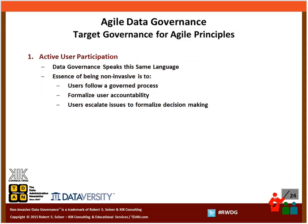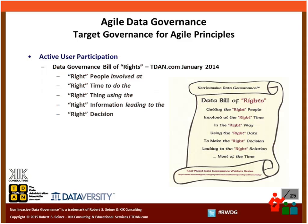The first item is active user participation. Most places I've read about agile development methodologies talk about actively engaging people through the processes associated with agile projects. It's kind of funny because data governance speaks the same language. The idea of data governance is to get the right people involved at the right time to do the right thing, using the right information to lead to the right decision. We want to make certain we're getting the appropriate users of the data, users of the systems, and the decision makers involved.